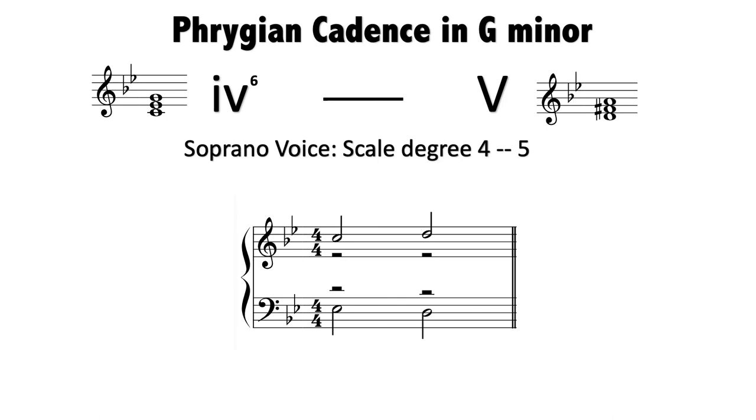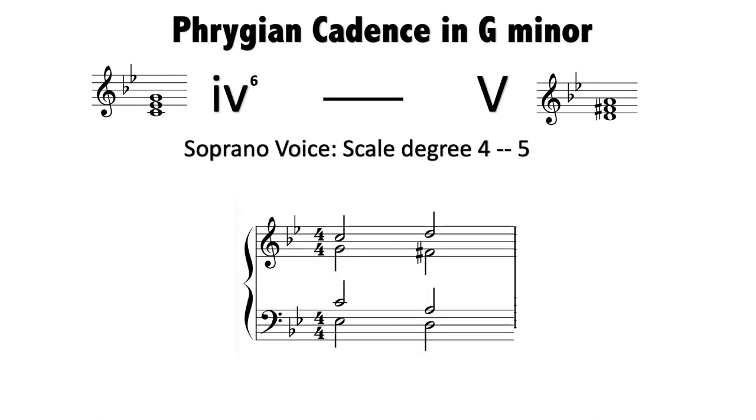The rest of this process is straightforward - we just fill in the remaining notes. One option is E♭, C, G, C for the first chord, and D, A, F♯, D for the second. This is just one option. There are many other ways you can distribute these notes, as long as you obey the rules of four-part writing.